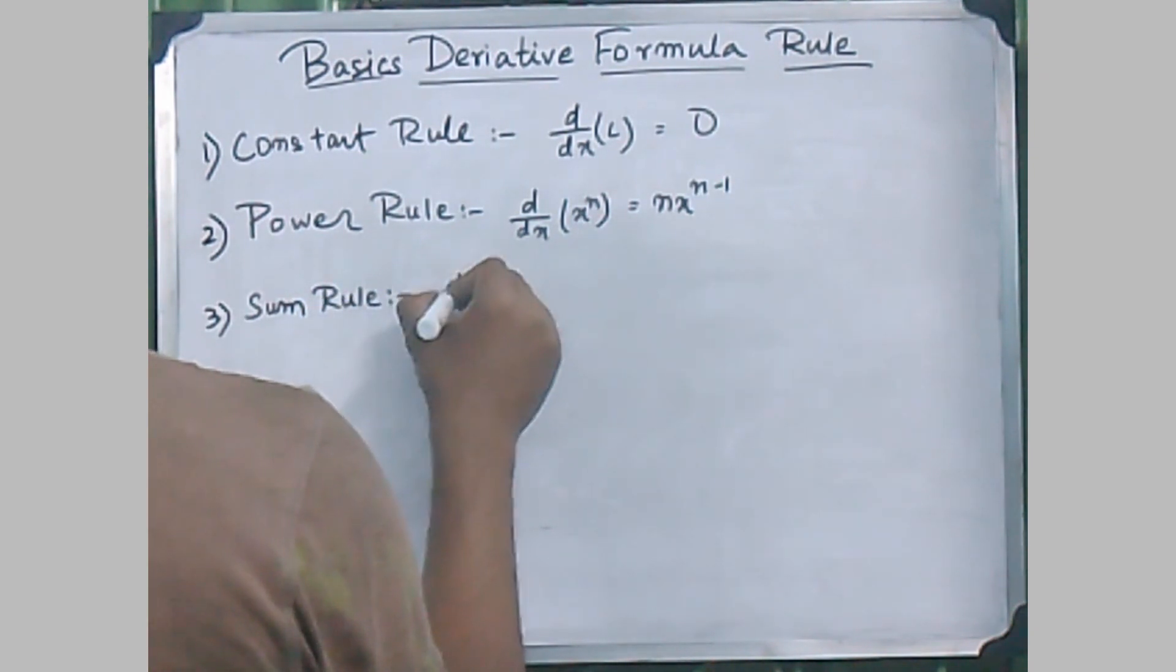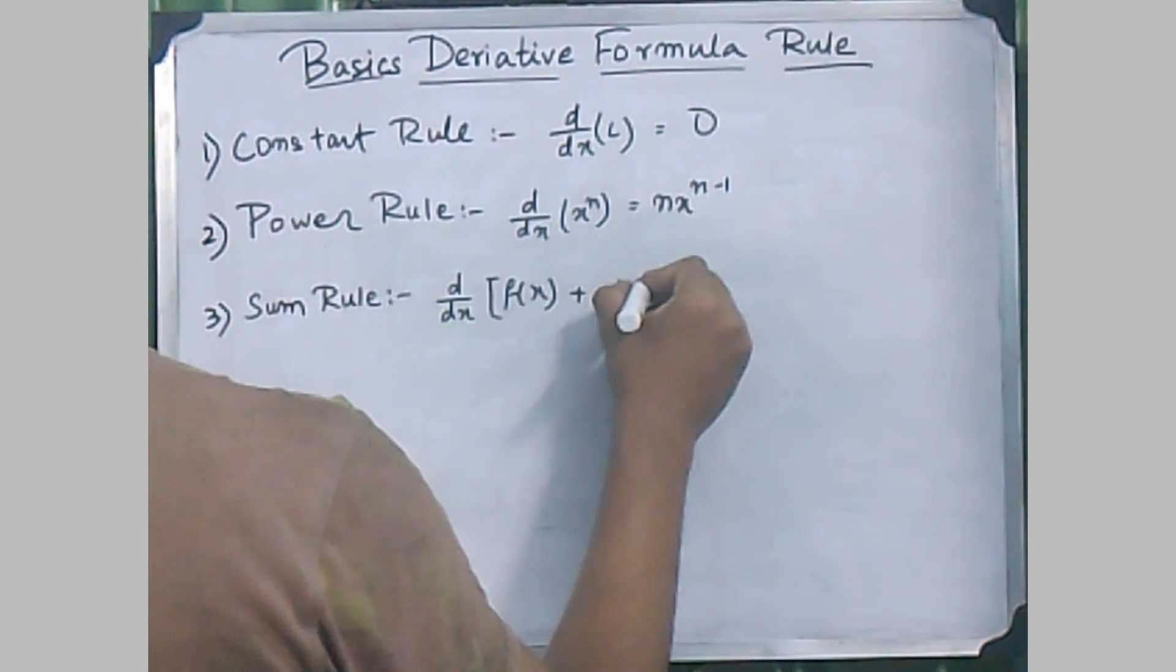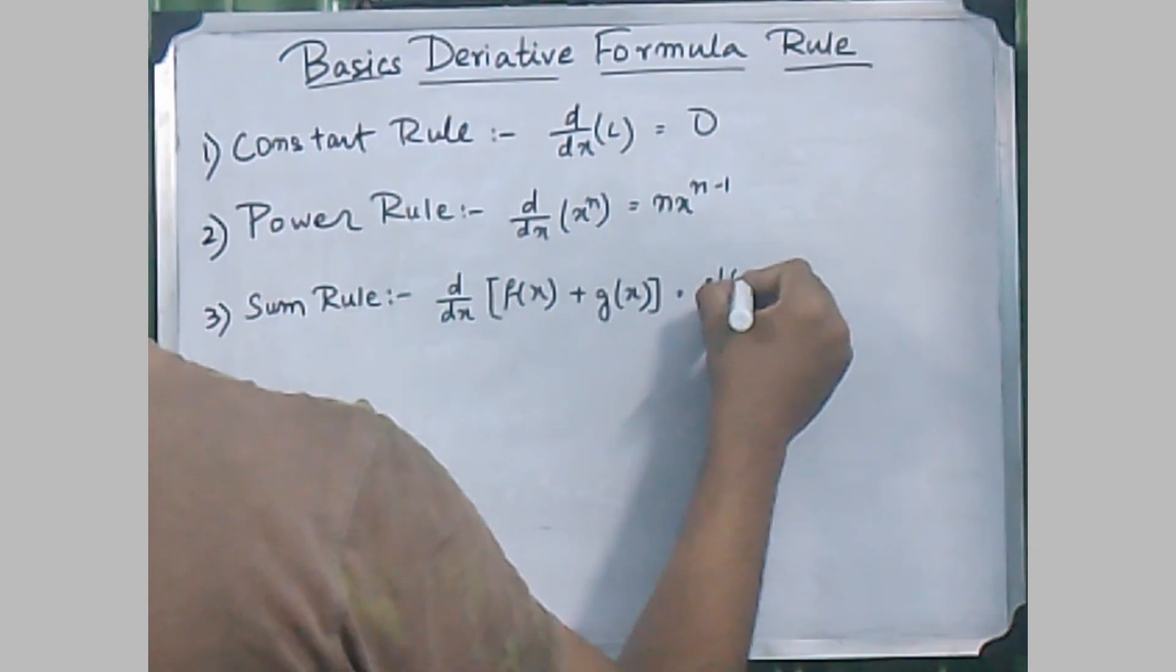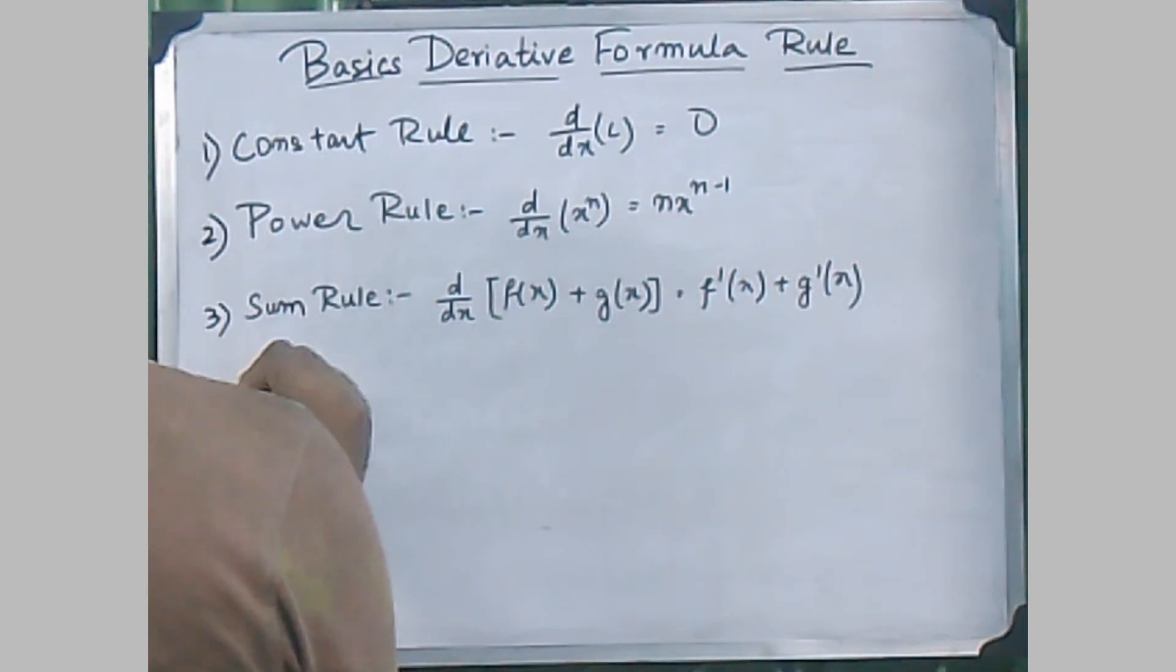The third rule stands for the sum rule, where d/dx of [f(x) + g(x)] will result to f'(x) + g'(x).